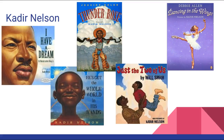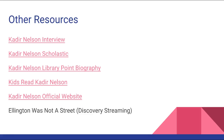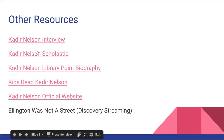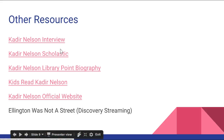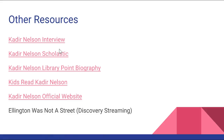First, we have Kadir Nelson. I love his illustrations — his books are just beautiful. He is an oil painter, and there are a bunch of hyperlinks here to videos and websites. His book Ellington Was Not a Street is a poem about a little girl who grew up during the Jazz Age, and there's a Discovery Streaming video of it. In one interview, Kadir Nelson talks about how he played college basketball and was also an artist — you can be more than one thing. You can be artistic and athletic, and care about both school and sports.